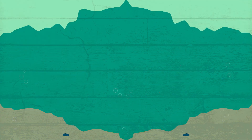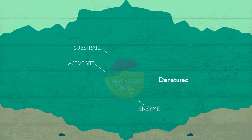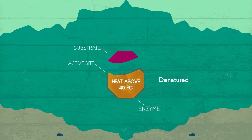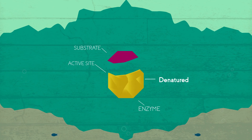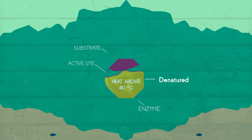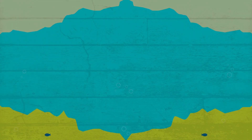If we look in more detail, denaturation of enzymes and any other protein means that the shape of the enzyme has changed in some way — usually a permanent change. The activity of an enzyme depends heavily on its shape, particularly the active site, which binds the substrate or substrates. This change of structure means that the active site is not shaped for optimal rate of reaction.